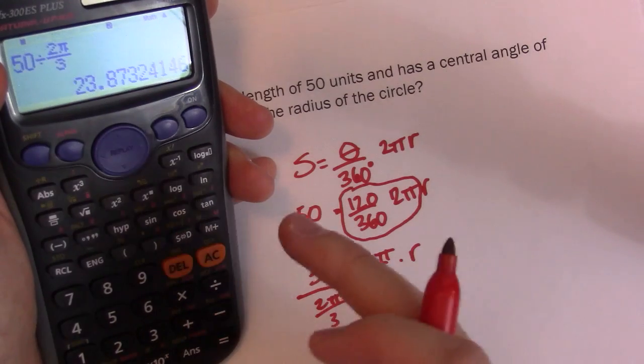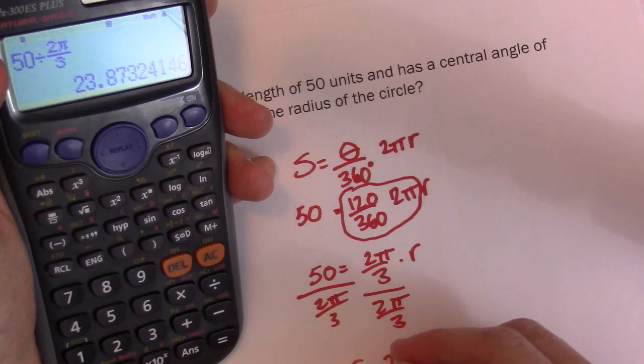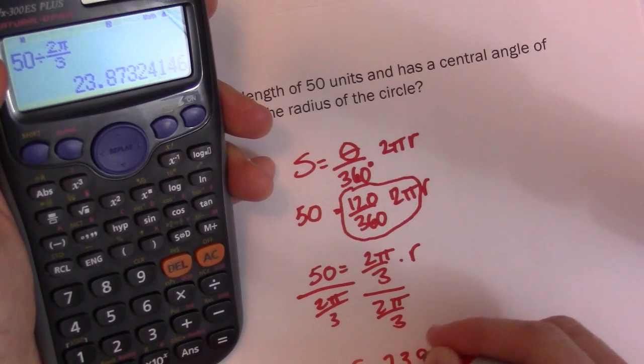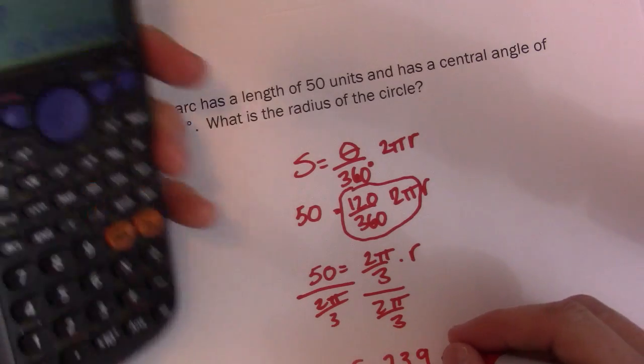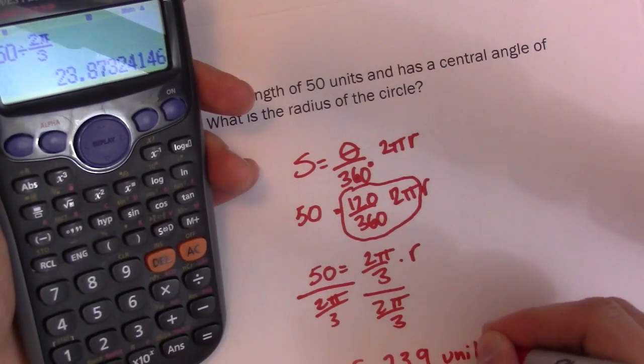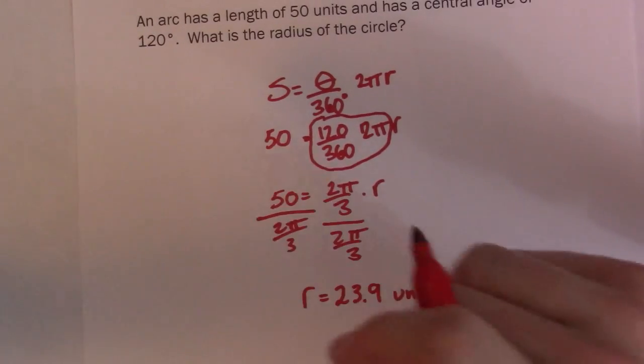So I don't know, it wasn't changing to a decimal for me, but anyway, that's no big deal. So it gives me back r is equal to 23.9. And I'll say that is in units. 23.9 units. So there it is. Simple as that.